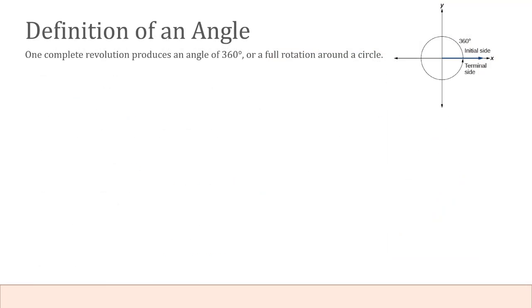So let's get a little bit more specific. One complete revolution produces an angle of 360 degrees or a full rotation around a circle. So in the circle that we have here, that circle is placed on an X, Y axis, and it is beginning its initial side on that positive X axis.